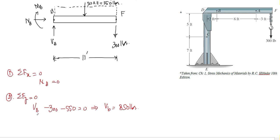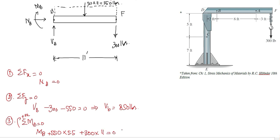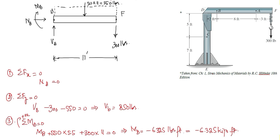To determine MB, we apply the third condition of equilibrium — summation of all moments at point B equal to zero, taking clockwise moments as positive. MB is considered clockwise, hence positive. The moment due to 550 pounds is also clockwise, with the force acting at the midpoint giving a moment arm of 5.5 feet. The moment due to 300 pounds is also clockwise, with the distance from point B to F being 11 feet. From this equation, MB equals −6,325 pound-feet. The negative sign shows the actual direction of MB is anti-clockwise.